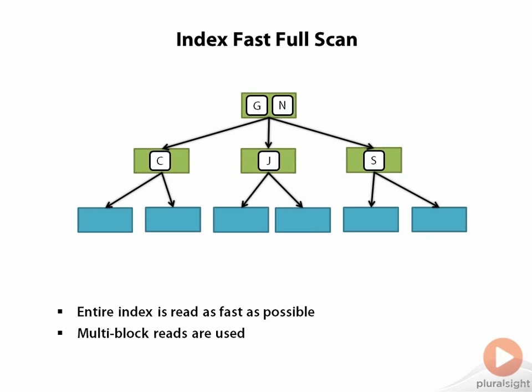Like a full table scan, an index fast full scan can use multi-block reads to reduce the number of physical I/O operations that have to be performed for any blocks that are not already in the buffer pool.